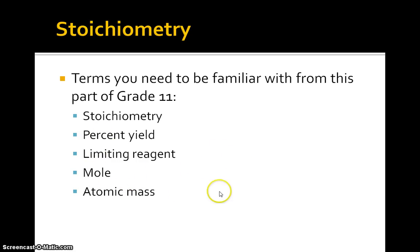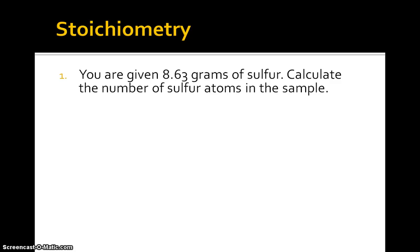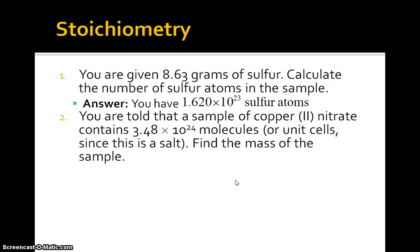Let's move on and do some problems with stoichiometry. You're given 8.63 grams of sulfur, calculate the number of sulfur atoms in the sample. Answer: you have 1.620×10²³ sulfur atoms.